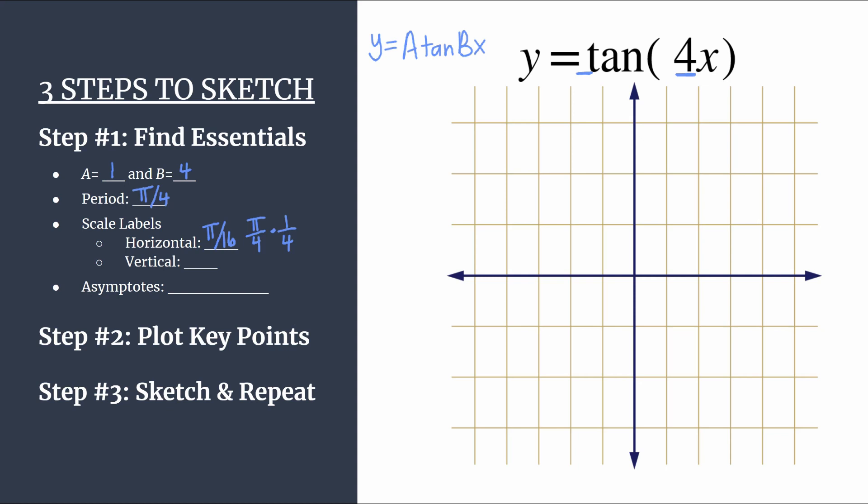So we will count our horizontal axis by pi over 16. And before we do that, our vertical scale, nice and easy. A is 1, so let's use 1. Let's go ahead and label our axes. And we'll come back to asymptotes.